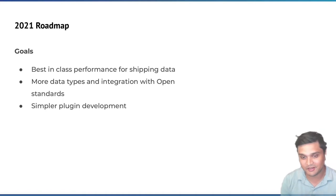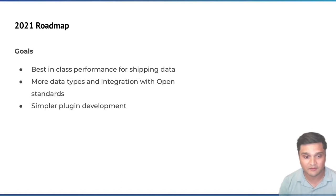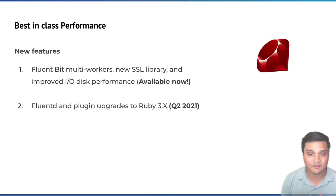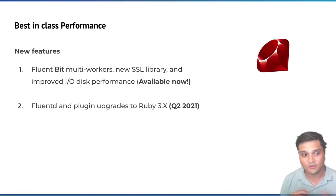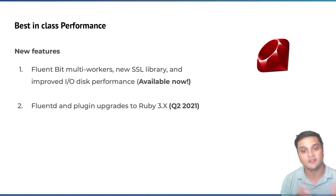The last roadmap goal is simpler plugin development. There's been a ton of innovation within the CNCF and the broader ecosystem — how can we make use of it and provide a great experience for developers and users to build what they need for these pipelines? For best-in-class performance with FluentBit, we just released multi-workers, new SSL libraries, and improved IO disk performance. And with FluentD, we're updating all plugins to Ruby 3.0, with an expectation of releasing FluentD with a Ruby 3.0 package within Q2 of 2021.